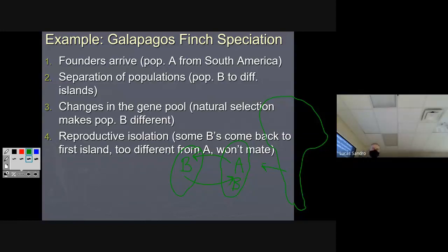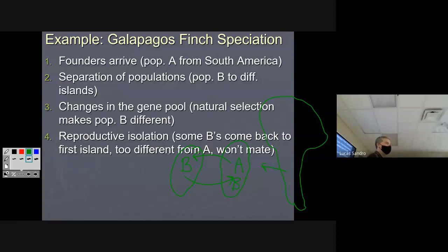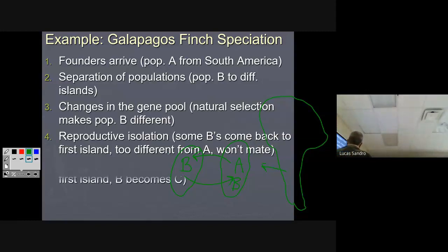They're too different now, so their relationship has changed. The A's and B's hanging out on the first island — they're not interbreeding anymore. Their niches mostly overlap except for the beak thing. They are direct competitors, and that competition is also going to drive natural selection. We call that ecological competition.